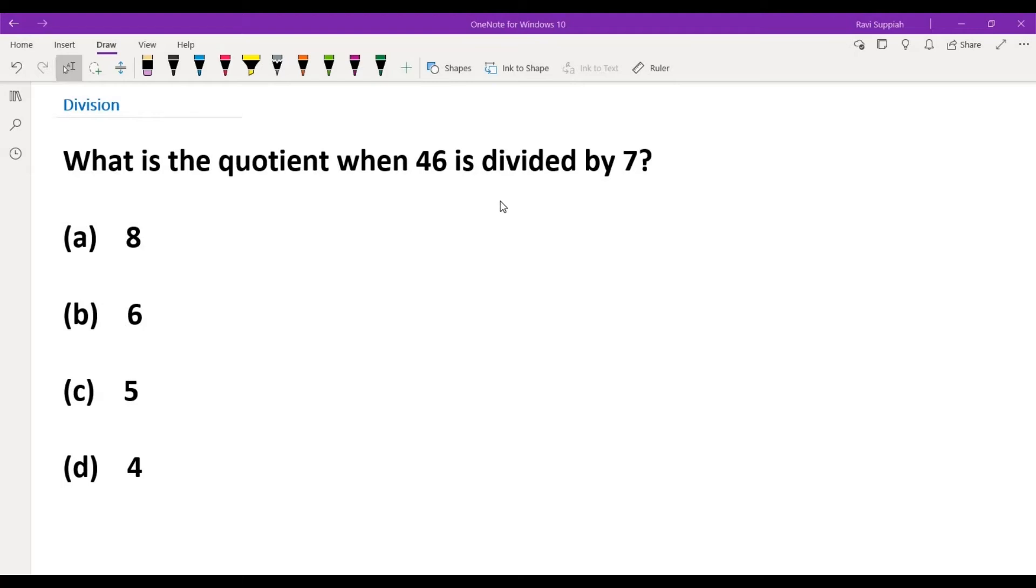Hi kids, now let's look at this division question here: what is the quotient when 46 is divided by 7? We have four options here: 8, 6, 5, and 4. What do you think is the answer? Well, let's try.